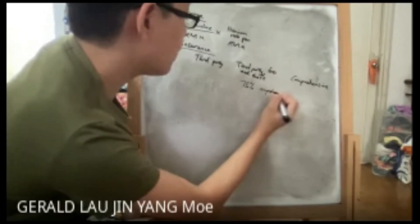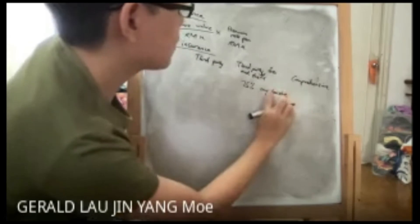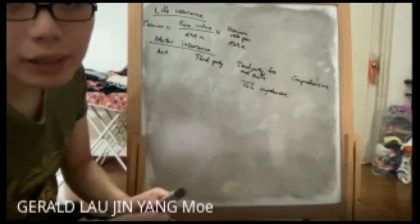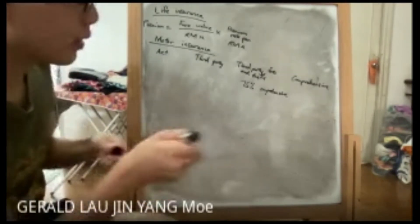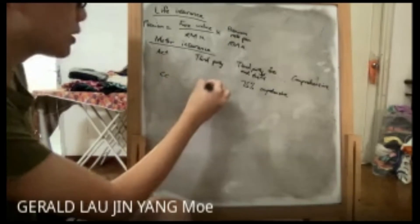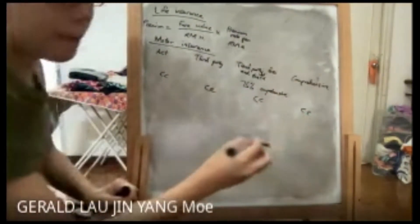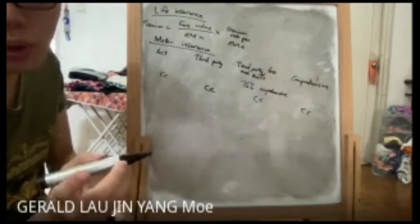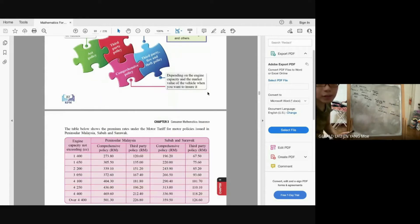Looking at the tariff table, the formula to calculate the basic premium of the comprehensive policy for Peninsular Malaysia is: Basic Premium = Rate for first RM1,000 + RM26 for each RM1,000 (or part thereof) on value exceeding the first RM1,000. For Sabah and Sarawak, the formula uses a rate for the first RM1,000 plus RM20.30 for each subsequent RM1,000.